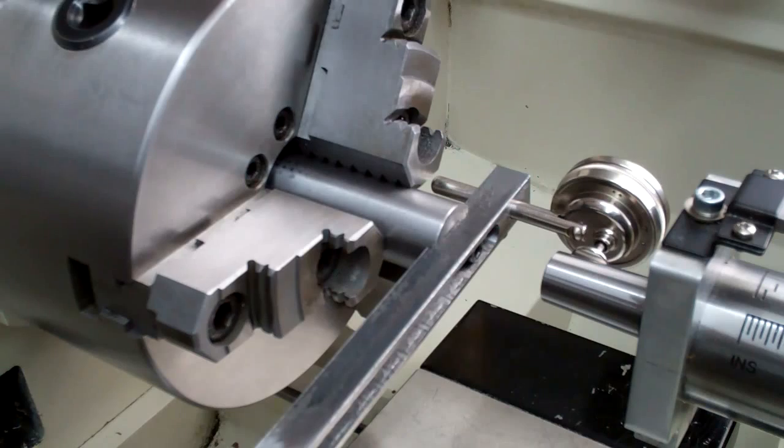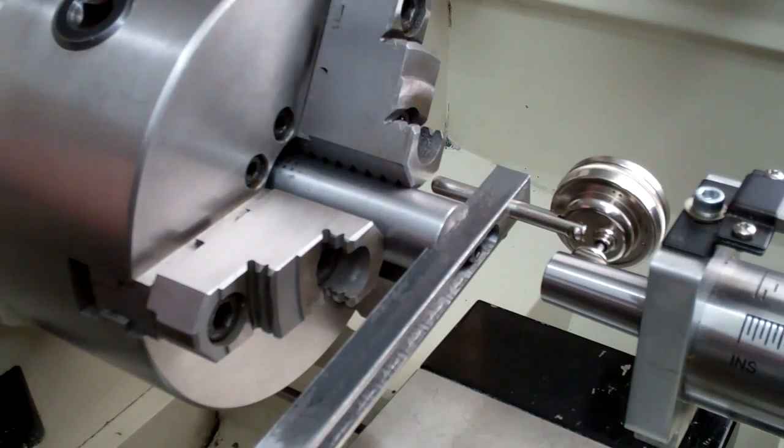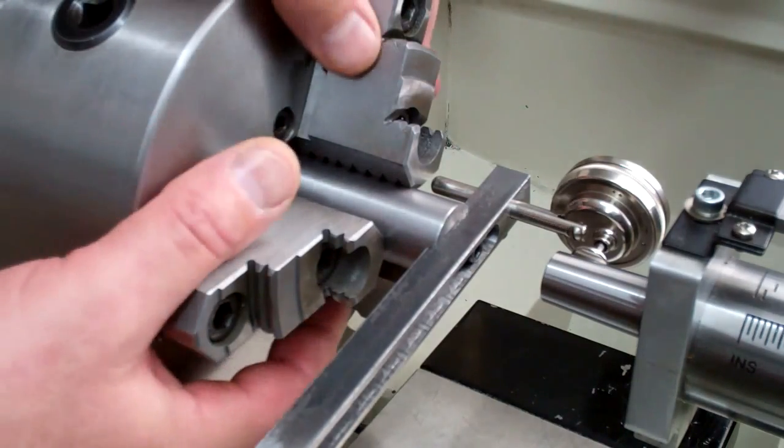Now if this was out and you had to move it, of course if let's say you're out four thousandths, you just move it two thousandths, bring it back, zero it, and you should be zero.